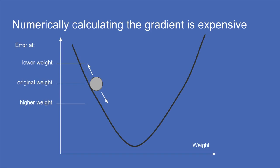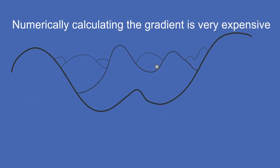The problem is that each time we calculate the error, we have to multiply all of those weights by all of the neuron values at each layer, and we have to do that again and again — once for each weight. This takes forever in computing terms. Instead of rolling down a simple valley, we have a very high-dimensional valley — one dimension for each weight — making the computation prohibitively expensive.